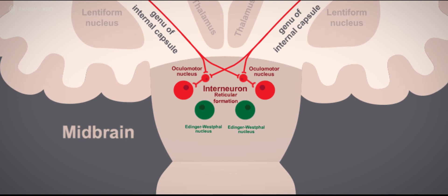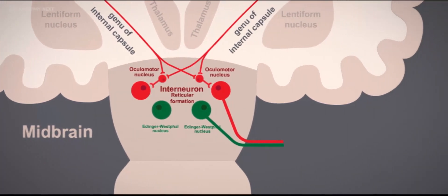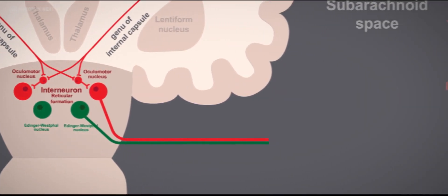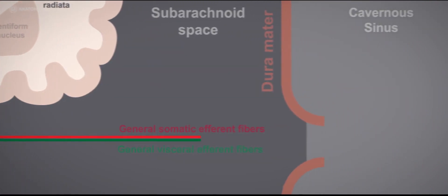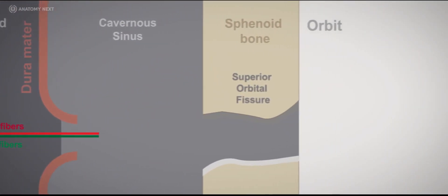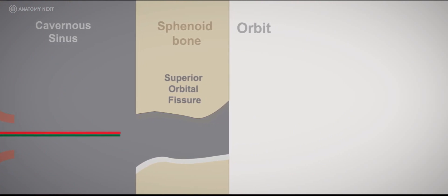The oculomotor nerve emerges from the brainstem in the interpeduncular fossa between the cerebral peduncles. It then pierces the dura mater and continues in an anterior direction inside the lateral wall of the cavernous sinus. It then leaves the cranial cavity and enters the orbit through the superior orbital fissure.